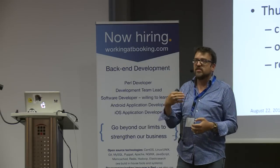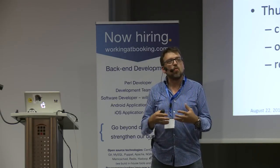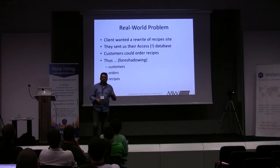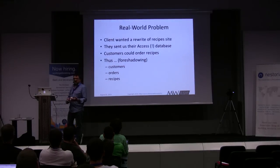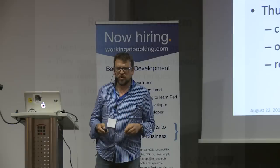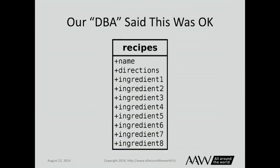Back around 2001, a real client sent us a problem — they wanted us to redesign their website. They were a pears company; you could buy pears and recipes for pears. Customers could order recipes. They had an Access database with scalability problems. Our DBA — and I use that word in quotes — said this was a good design for the recipes table. If you don't know how to design a database and really want to understand the basics, can you tell me what's wrong with it?